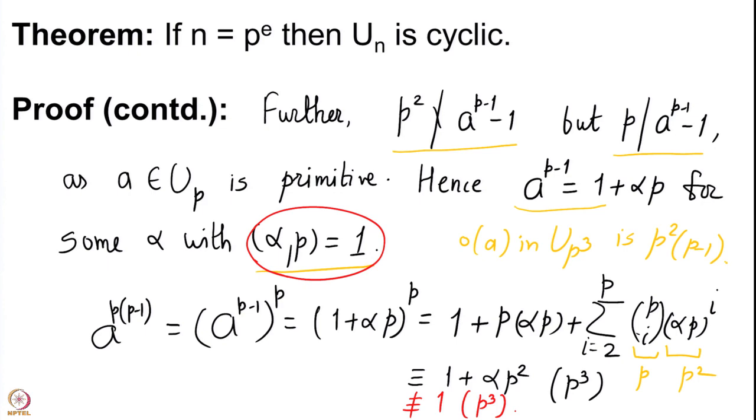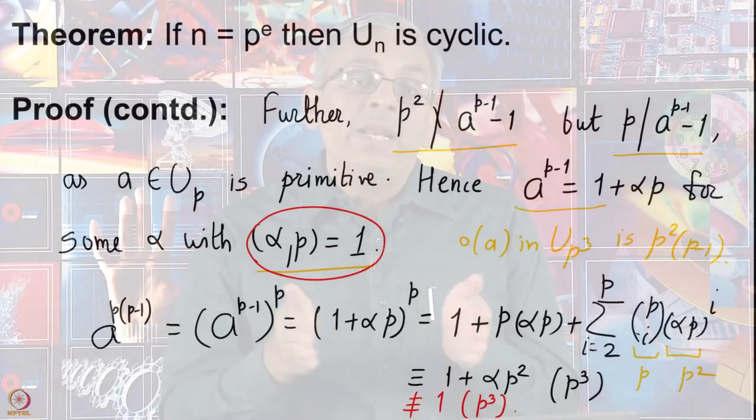So we are proving that U(n), where n is a power of an odd prime, is cyclic. We did the p² case first and now the p³ case. At the beginning of the next lecture we will look at all higher powers and use induction to show that such U(n) is cyclic. I hope to see you in my next lecture. Thank you.